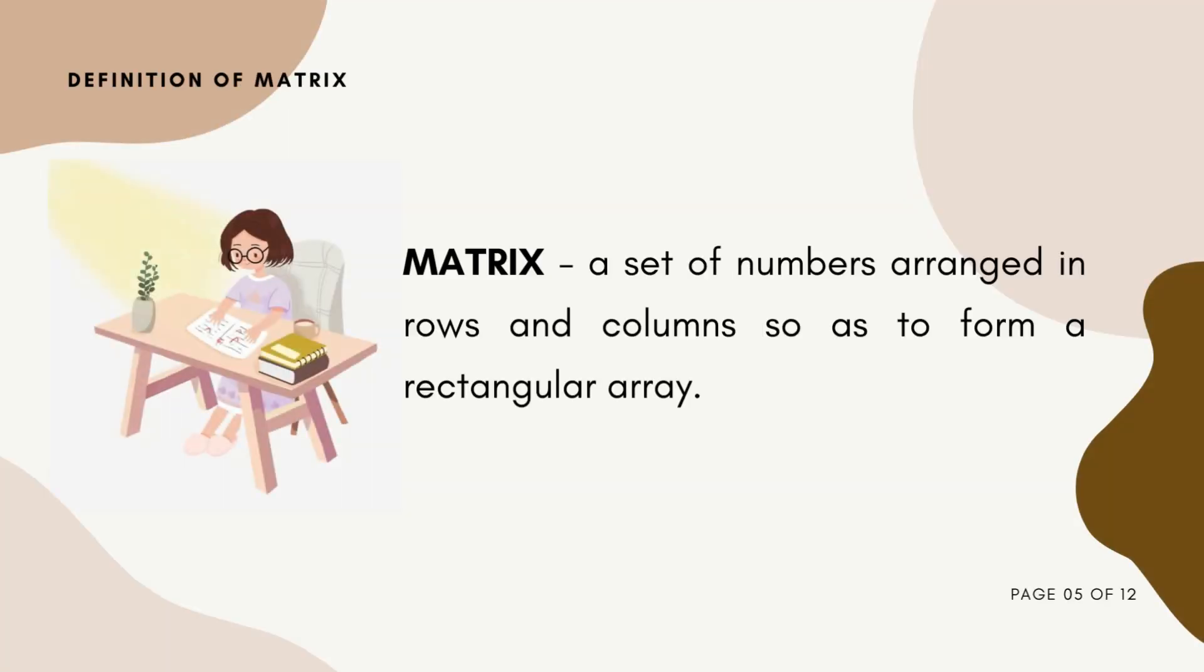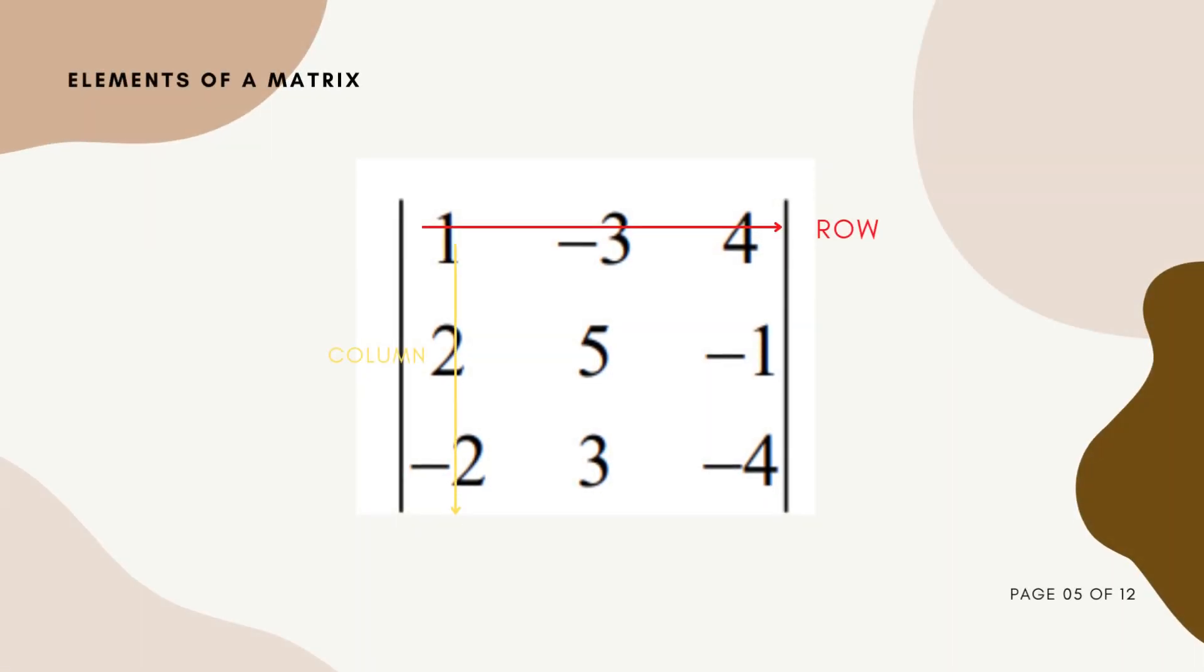First, what is a matrix? A matrix is a set of numbers arranged in rows and columns so as to form a rectangular array. This is what a matrix looks like. We have here a matrix consisting of three rows and three columns. The top line in the red arrow is our row and our yellow arrow is considered as our column. In describing matrices, the format is rows times column, like how many rows times how many columns. Just like in this example, we have three rows and three columns, so it is called a 3x3 matrix.